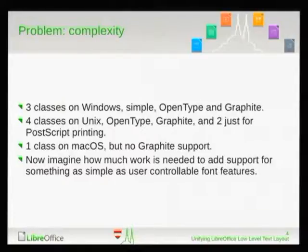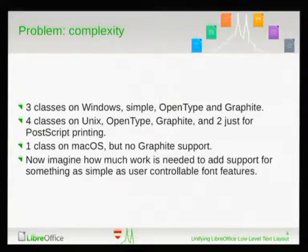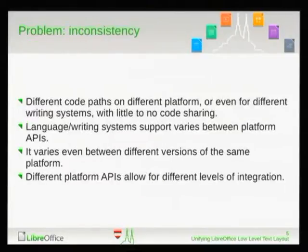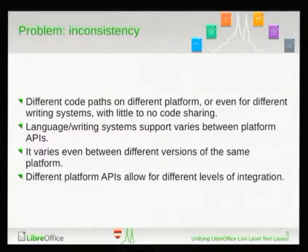If you just do something simple like adding user-controllable features — something very basic that should be ten lines of code — you need to modify all eight classes at least. But the biggest problem is the inconsistency. We use different engines on Windows, on Unix, on Mac OS.